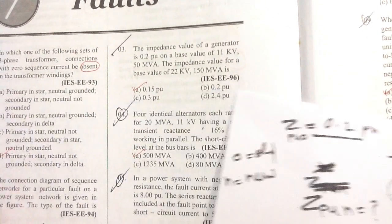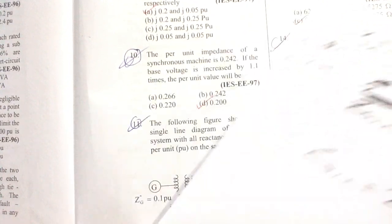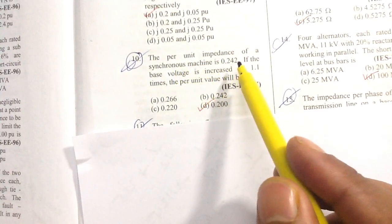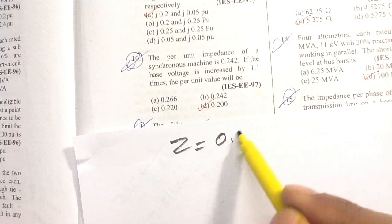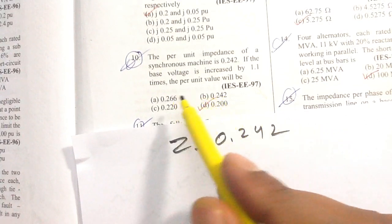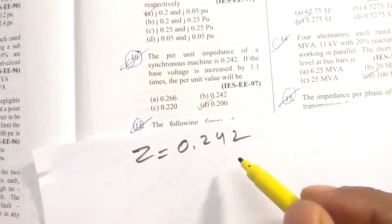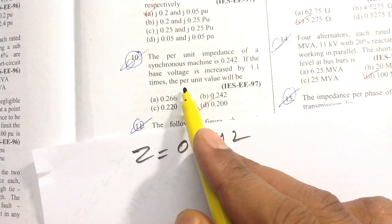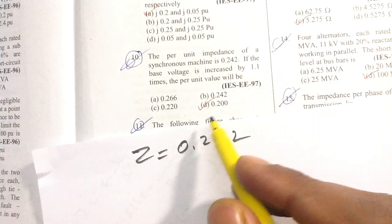Question number 10: the per unit impedance of a synchronous machine is 0.242. If the base voltage is increased by 1.1 times, find the new per unit value.